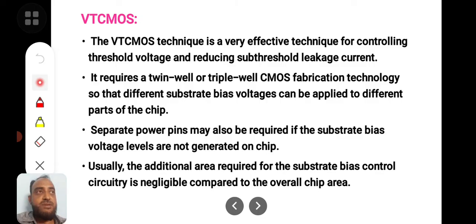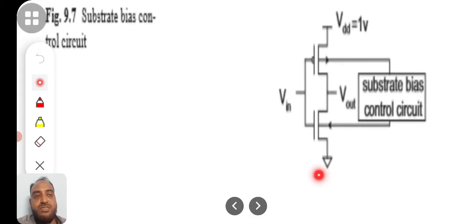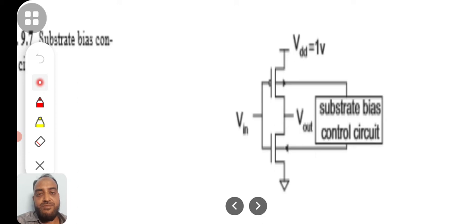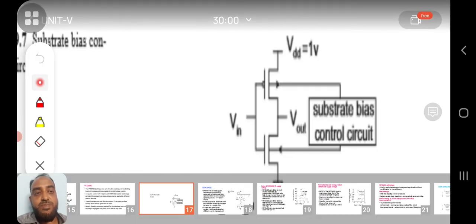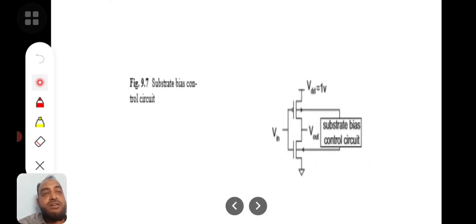Normally, this circuitry will have 10 to 12 transistors, or less than 50. When compared to a 10 lakh transistor chip, some 20 to 50 transistors is negligible. So it is a very economic concept — having variable threshold voltage technology for reducing the subthreshold leakage current, which is a dominant and considerable amount of power consumption. This substrate bias control circuit will be connected to the substrates of the P-CMOS as well as N-CMOS transistors in twin-tub and triple-well process.